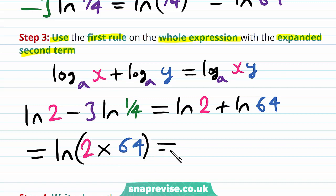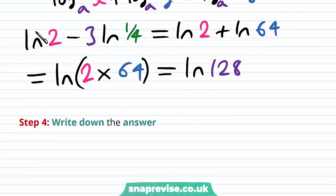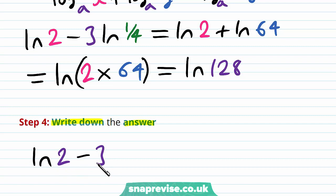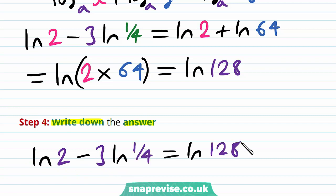And this gives us the natural logarithm of 128. Our last step is to write down the answer. The natural logarithm of 2 minus 3 lots of natural logarithm of 1 quarter is equal to ln of 128.